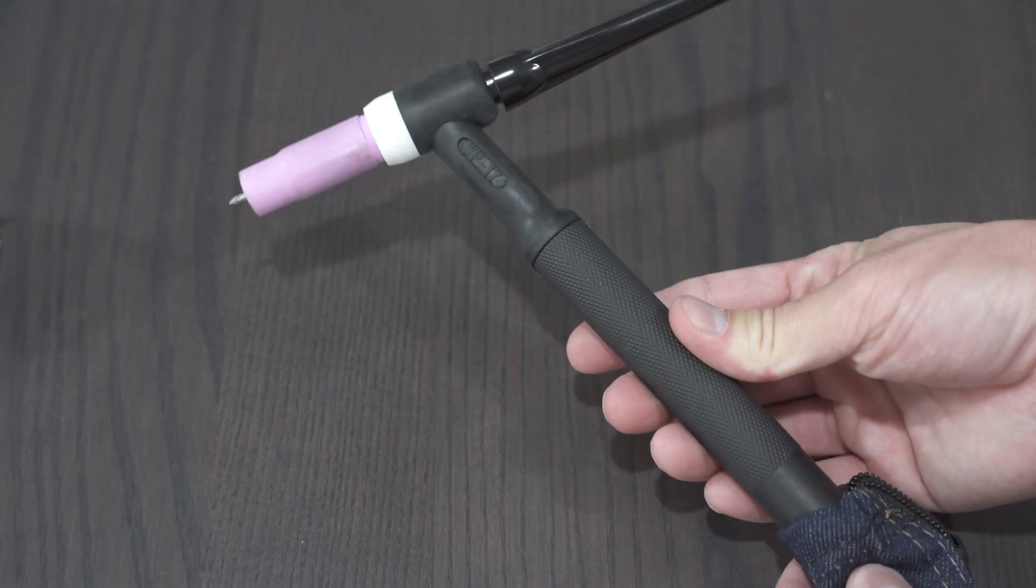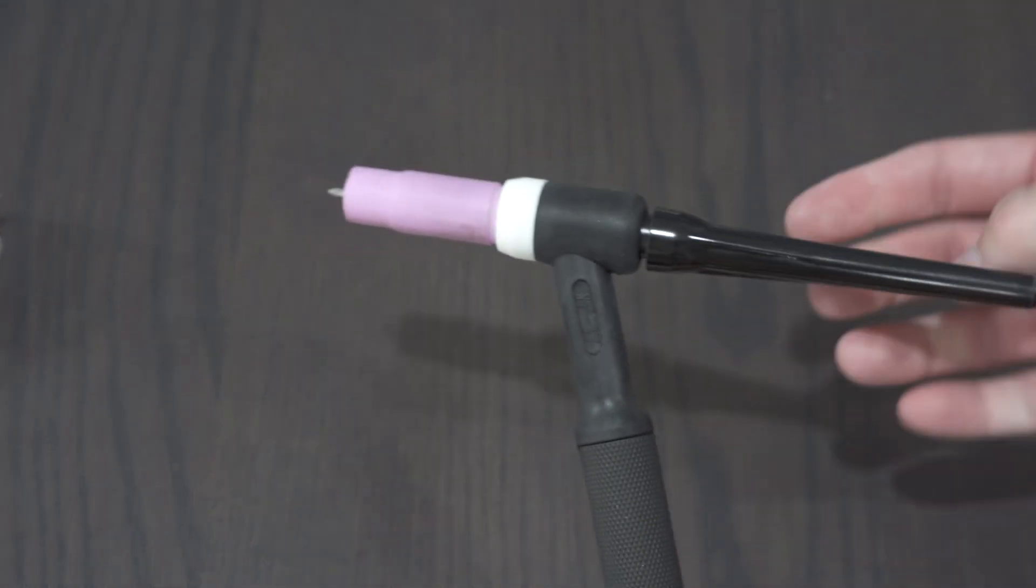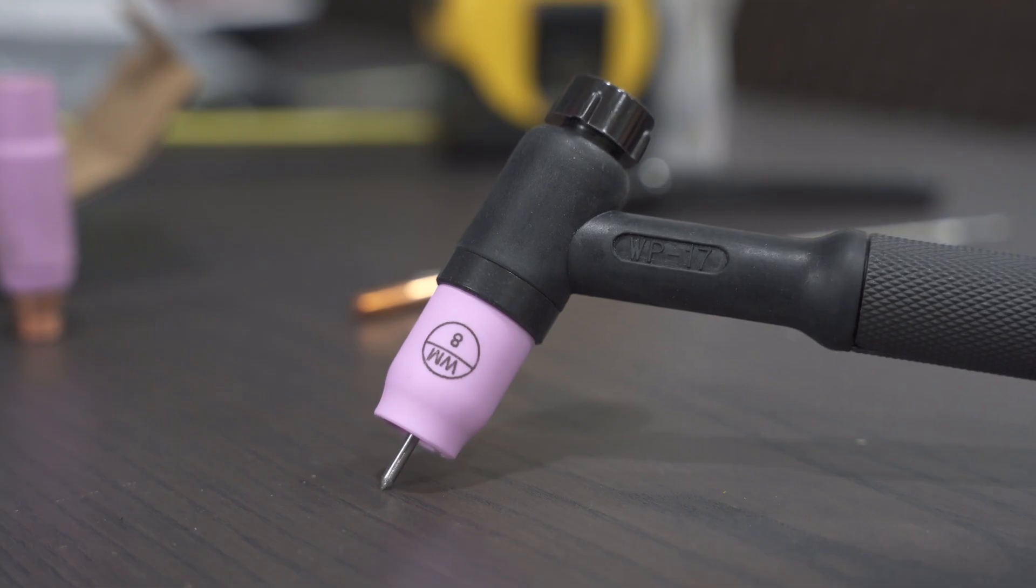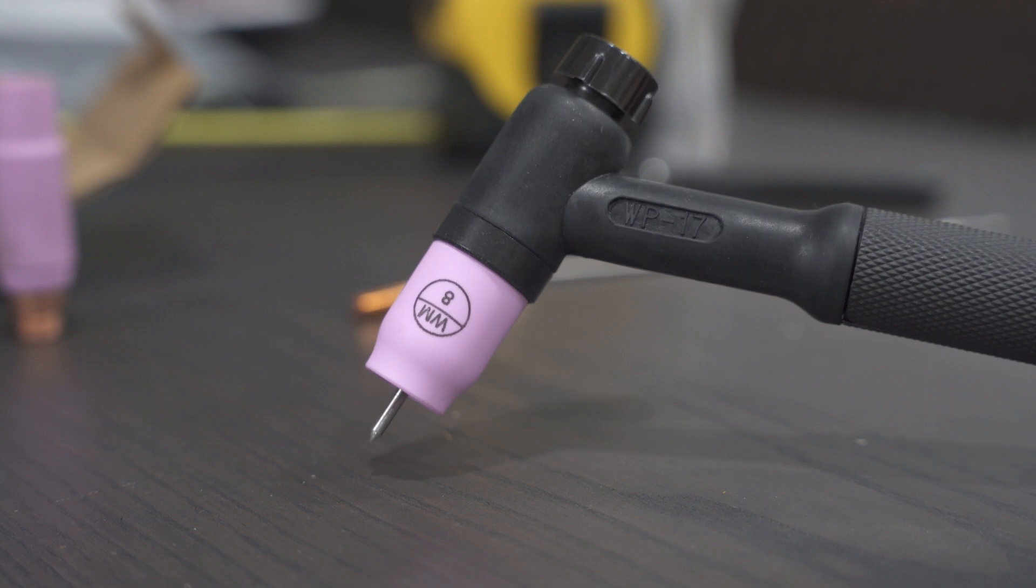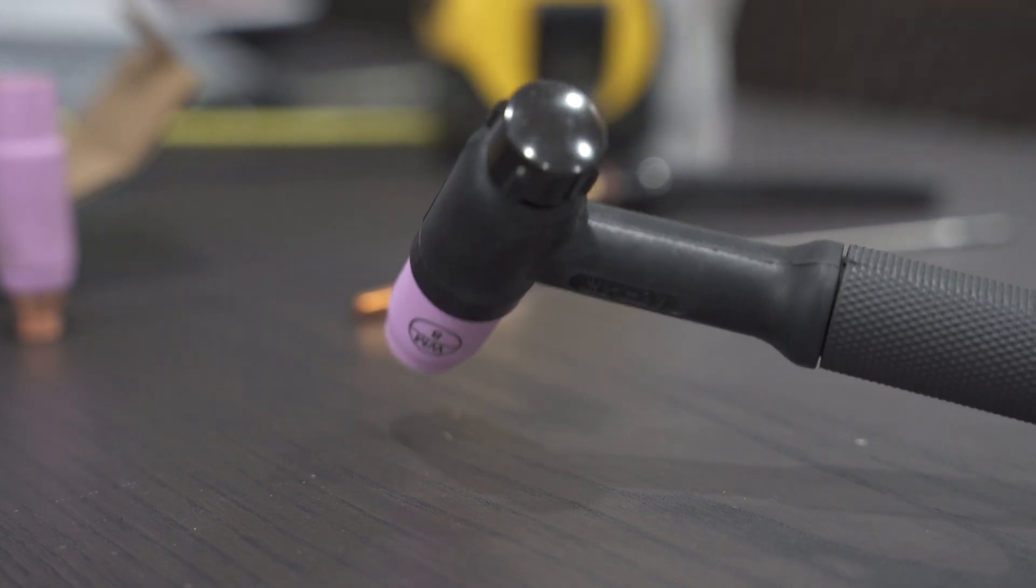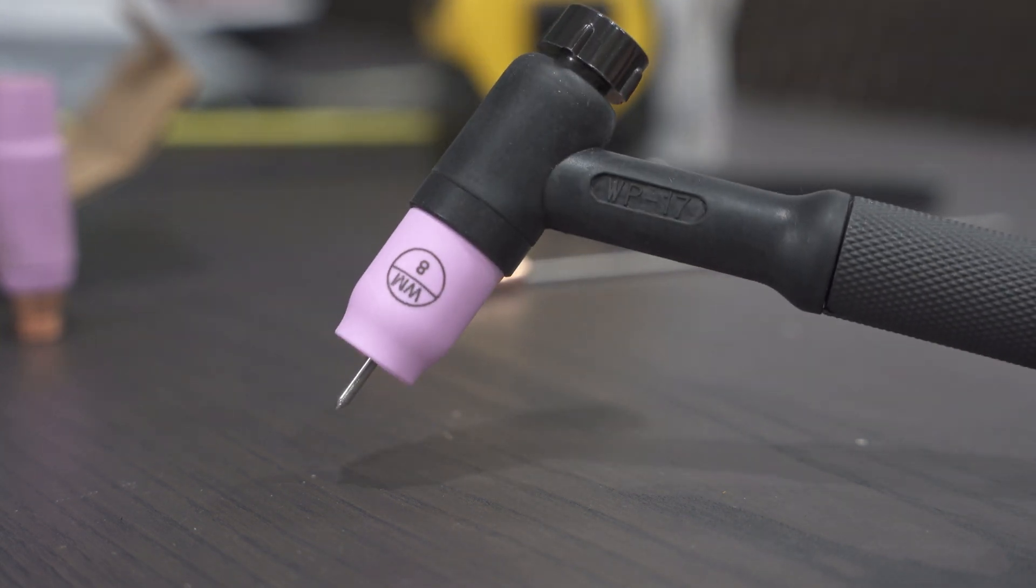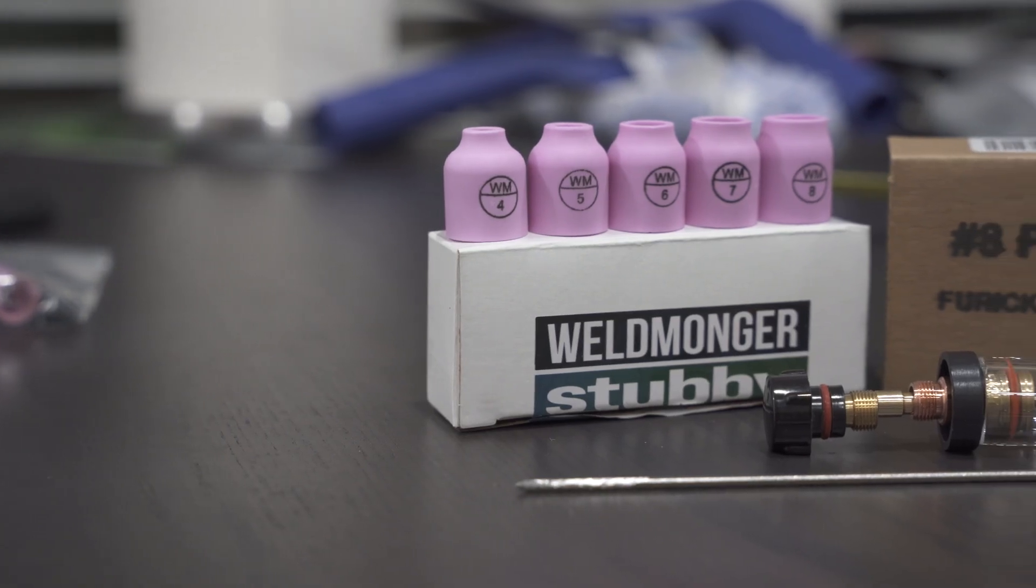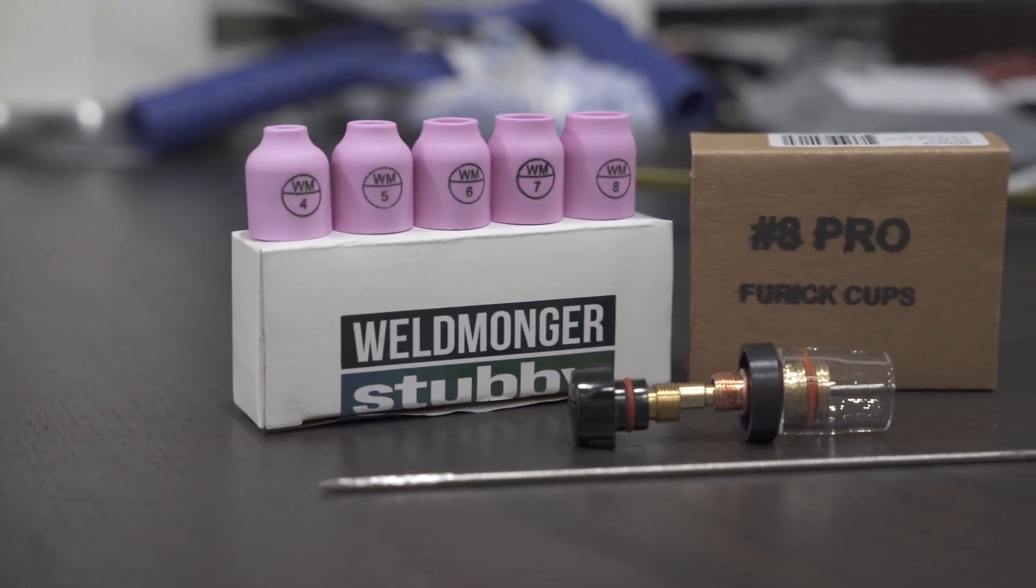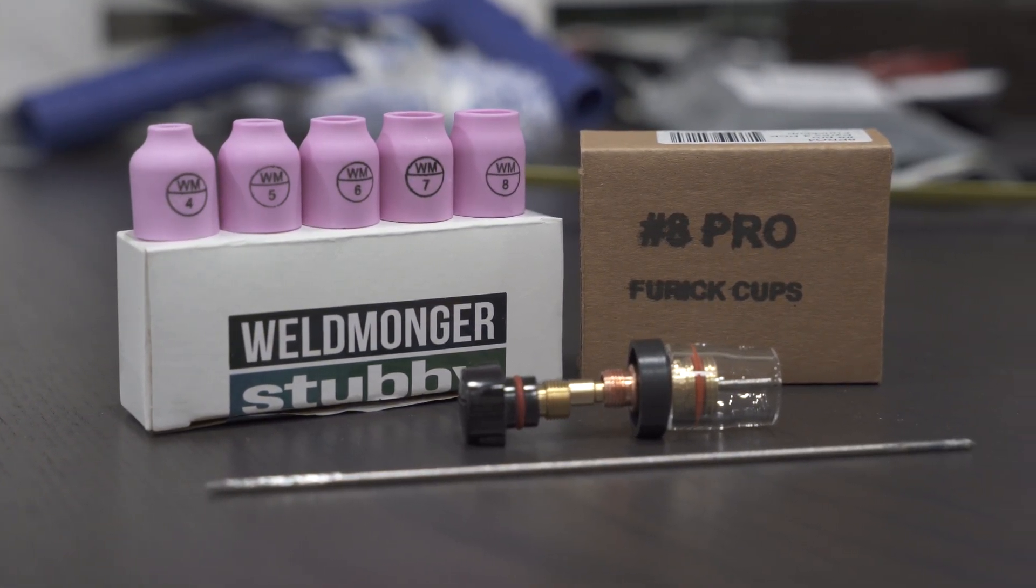Welcome. Today I've got a quick video for you on how to convert to a stubby gas lens kit. This example we have today is a 17 size and style torch. I'm fairly new to welding and it was actually fairly difficult to find this information, so I figured I'd make a video on it and help anyone out that is in the same boat.